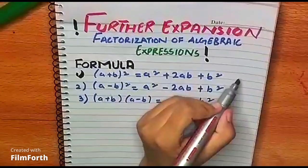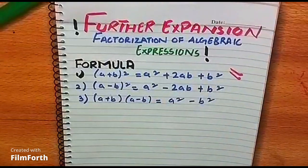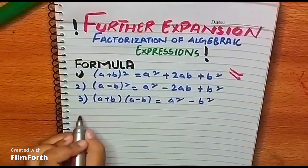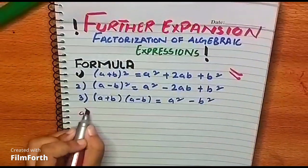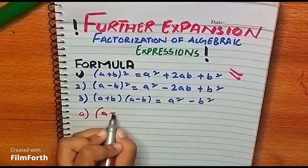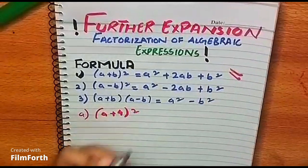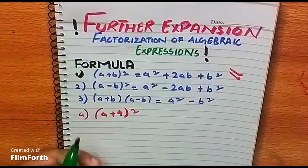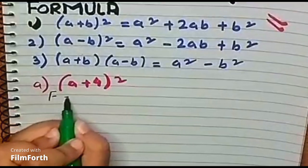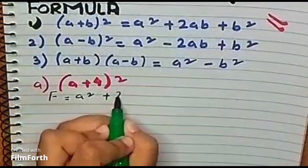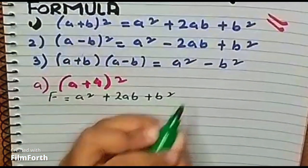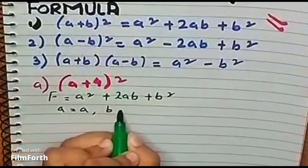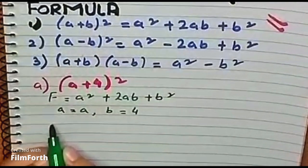We will get an example for the first identity. The question is (a + 4) whole square. The formula I am going to apply is a² + 2ab + b², where a is equals to a and b is equals to 4.